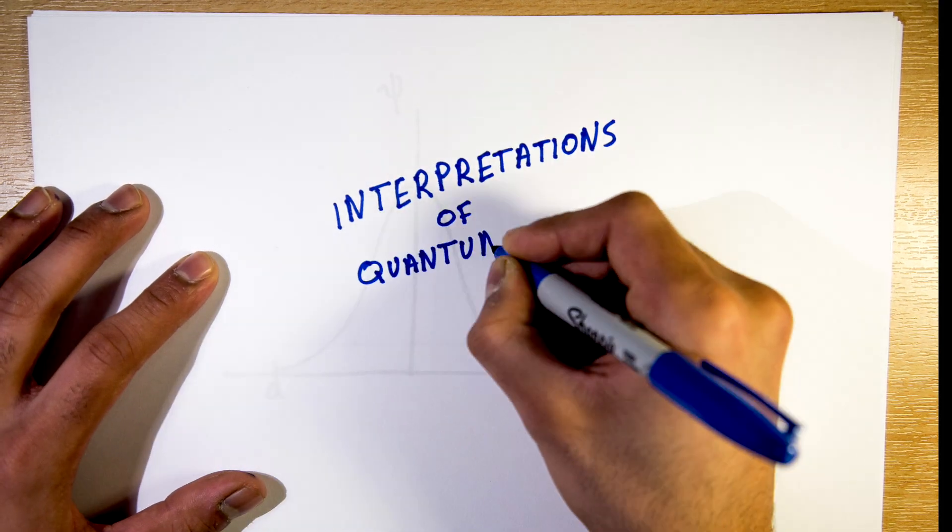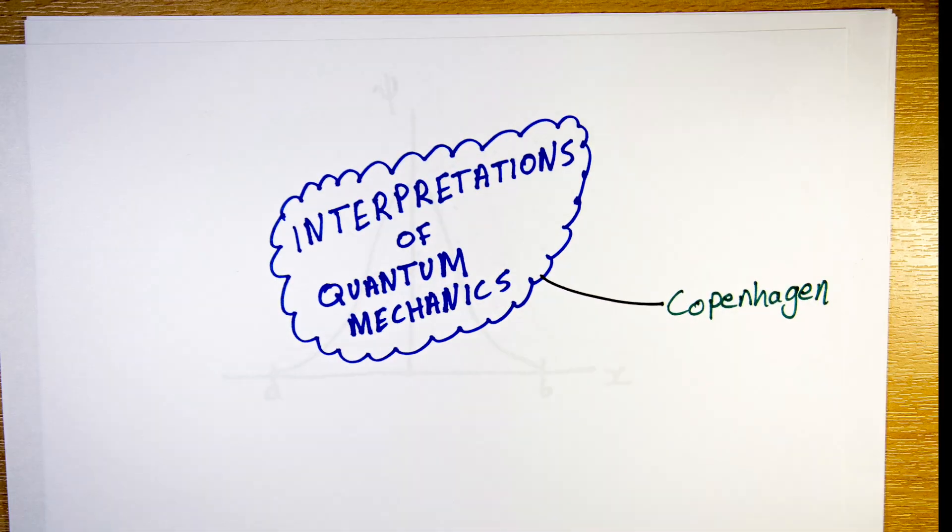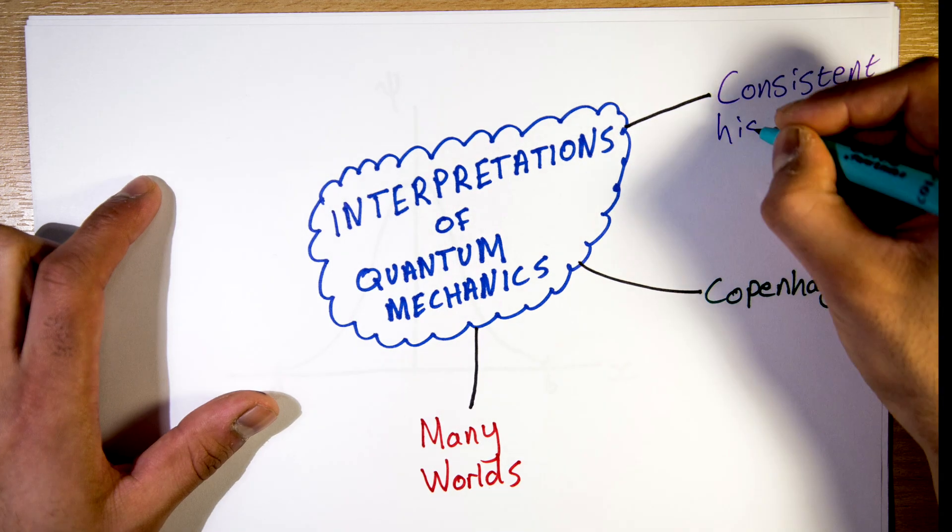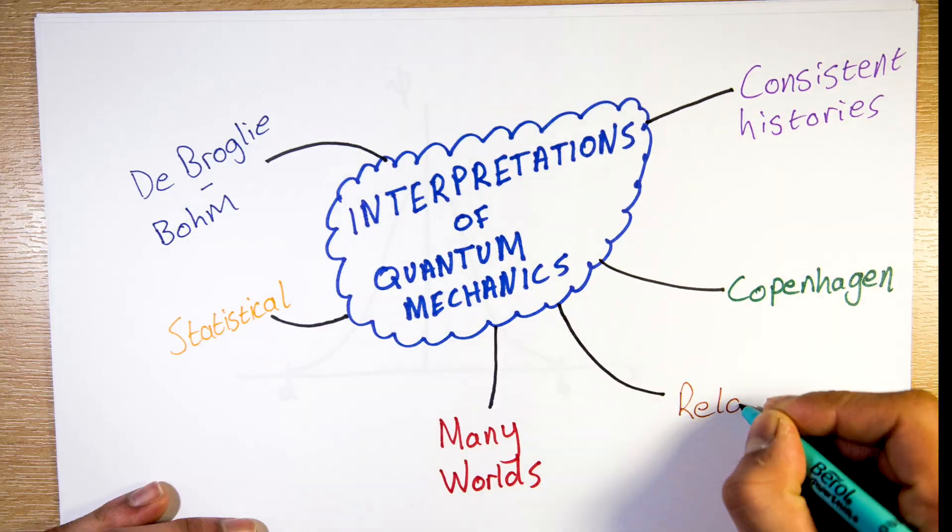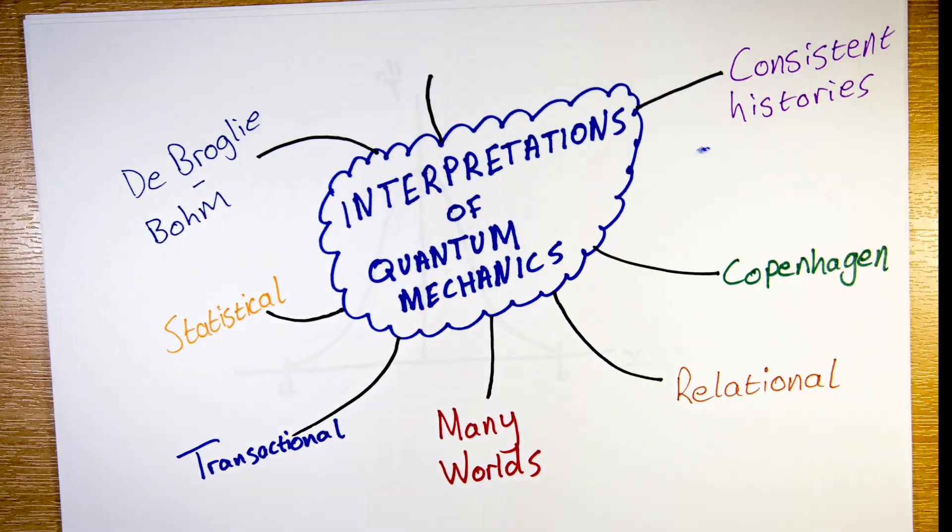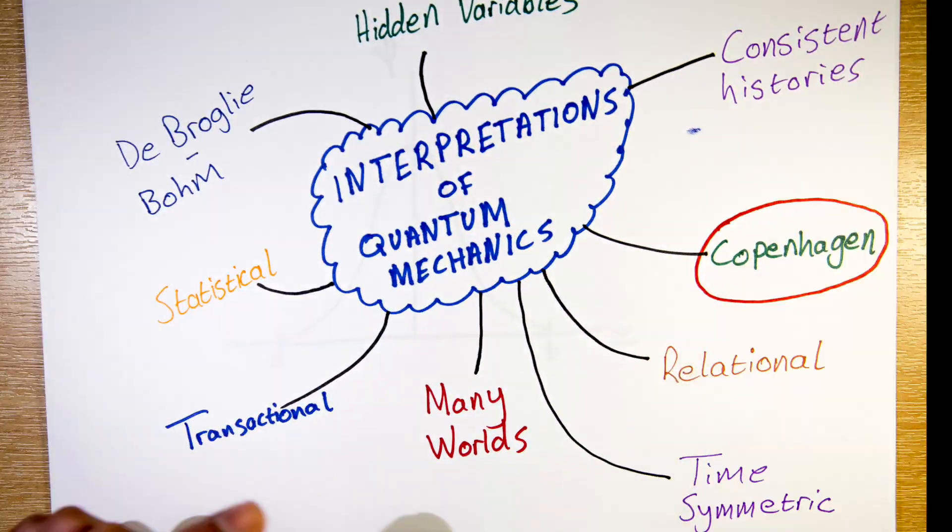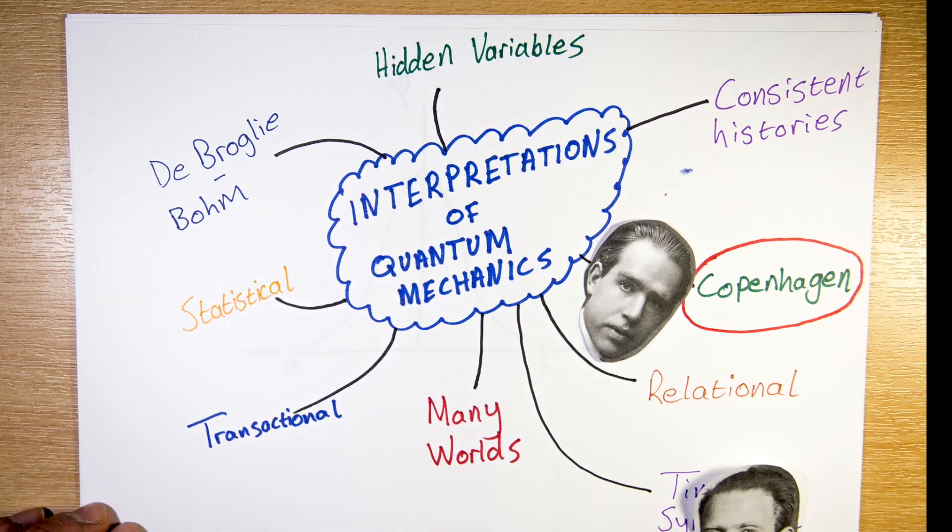The sheer confusion that arose from quantum theory led to various interpretations as to what exactly is happening in the world of particles. The most popular of these interpretations is the Copenhagen interpretation, devised mostly by Niels Bohr, remember him, and Werner Heisenberg in the 1920s.